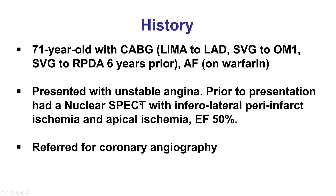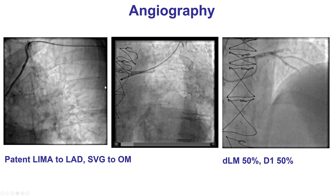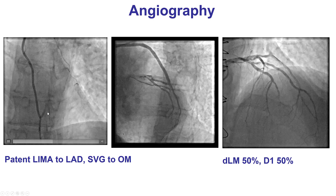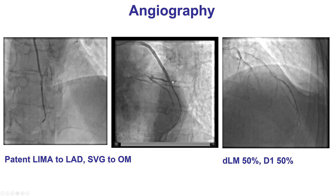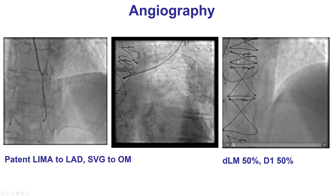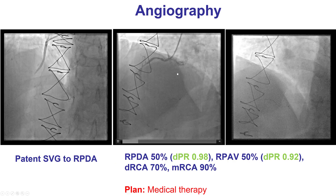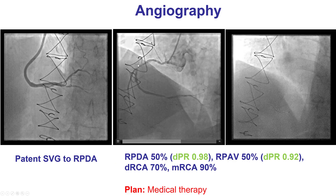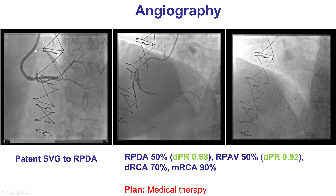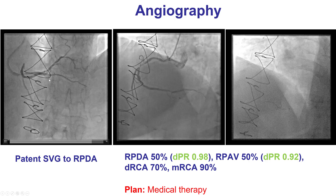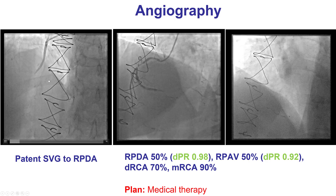He had a previous nuclear stress test with inferior ischemia and underwent coronary angiography that demonstrated patent Lima to LAD, patent vein graft to OM. There was disease in the native left main, and then there was a significant lesion in the mid-right coronary artery, however, with a patent vein graft to the PDA, causing tenting of the vessel.